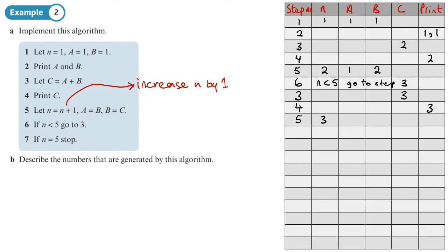We make a equal to b — so a is now two — and b equals c, so b is now three. Step six: if n is less than five, go to step three. n is still three, so we go to step three again. c equals a plus b: two plus three gives five. Print c: output is five.